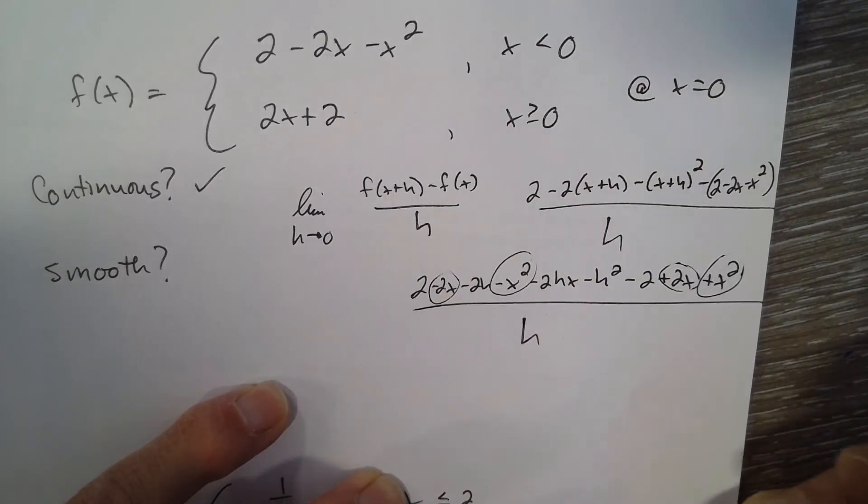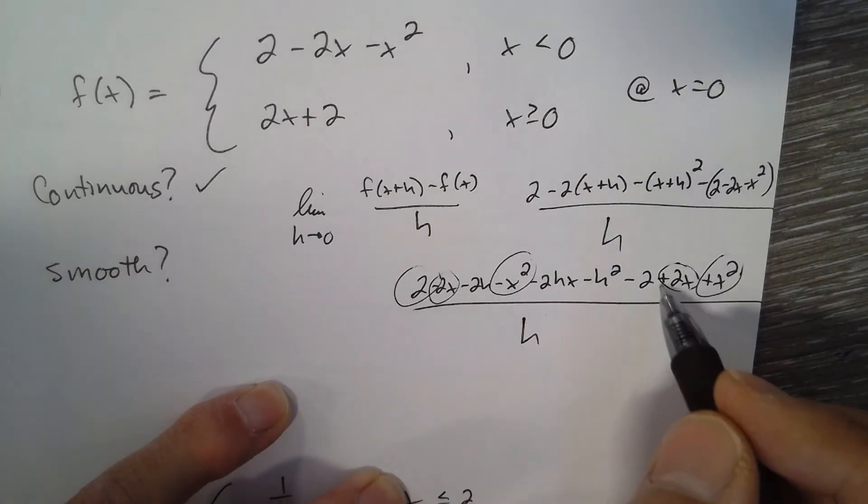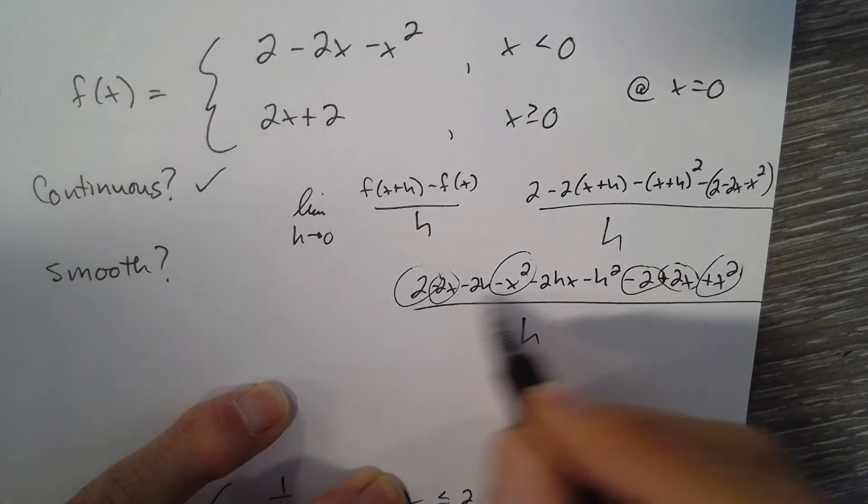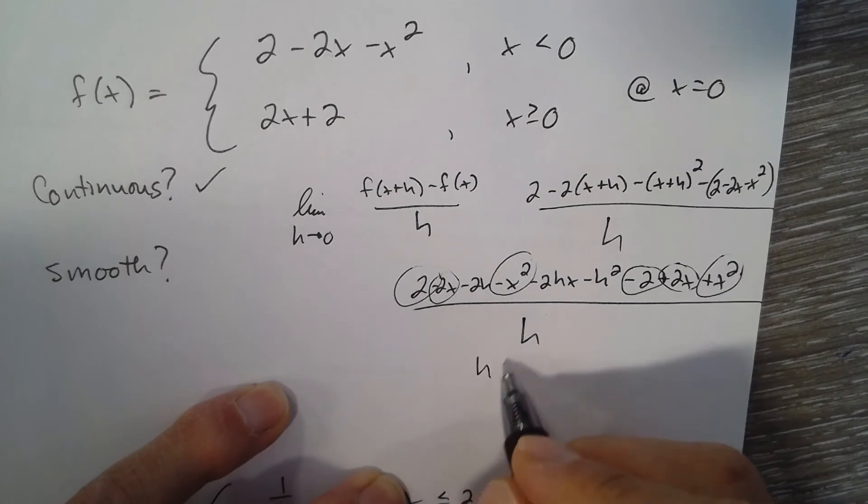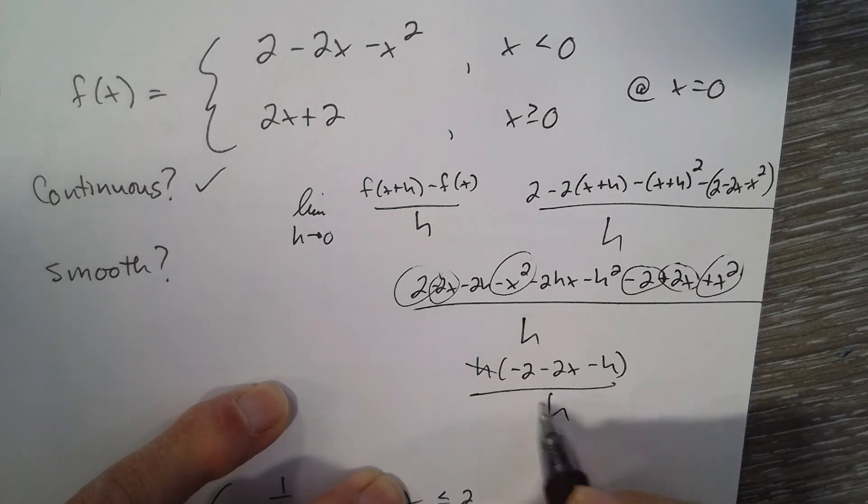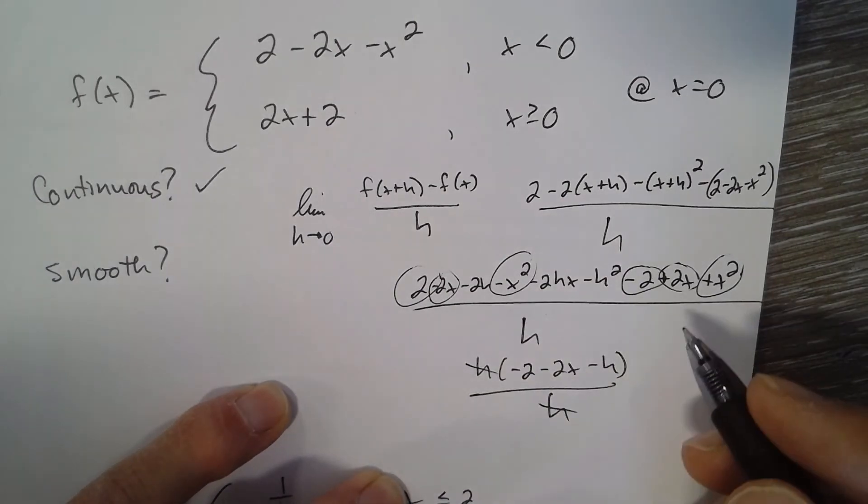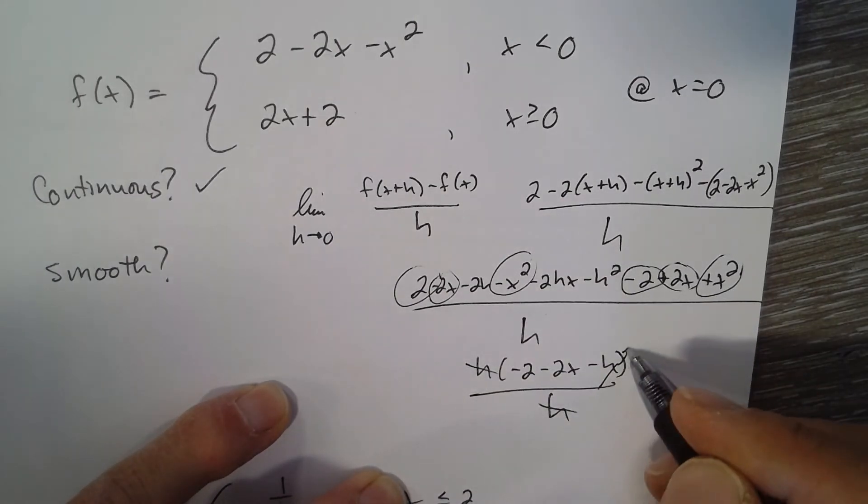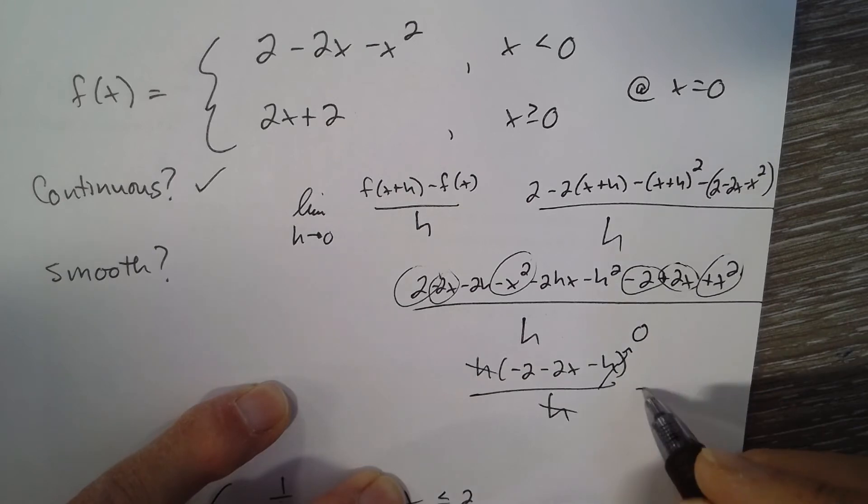You can pull an h out of all three top terms: negative 2 minus 2x minus h. Then h is going to zero, so the derivative is negative 2 minus 2x.